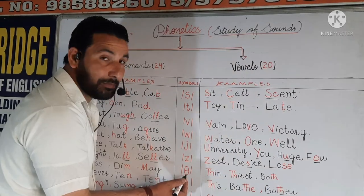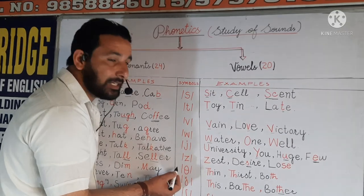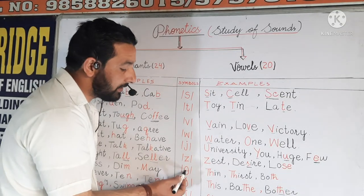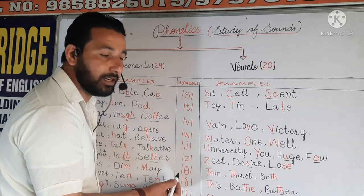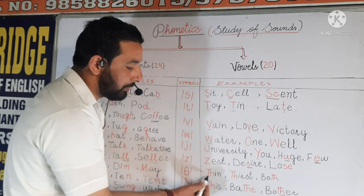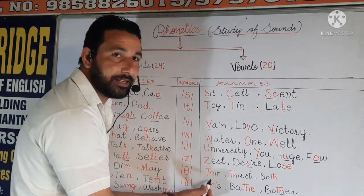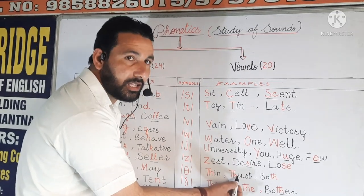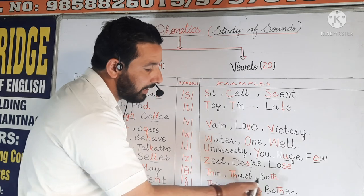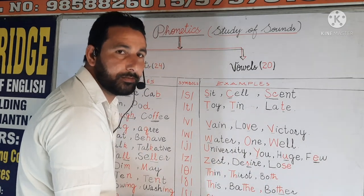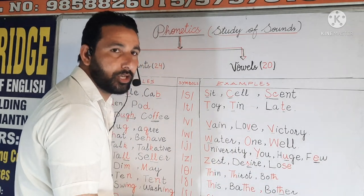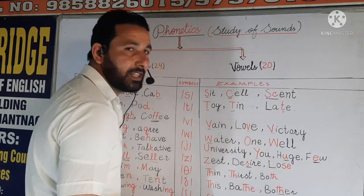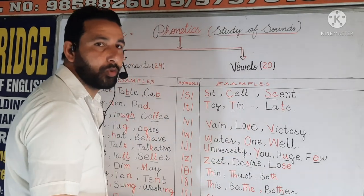Next symbol looks like theta but has the sound TH. For example, we have 'thin', we have 'thirst'. And we have 'both' — at the end we have the end sound TH.